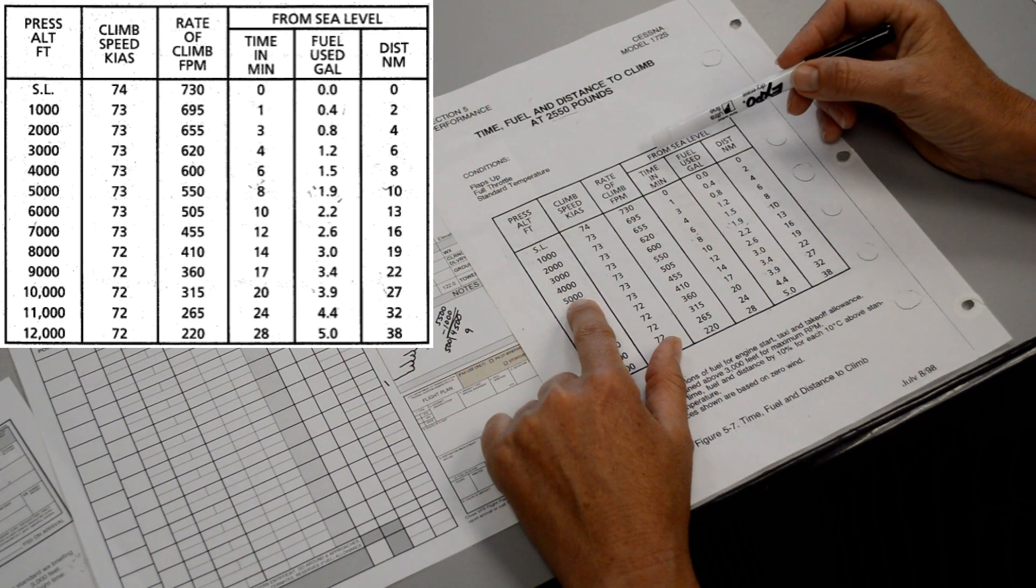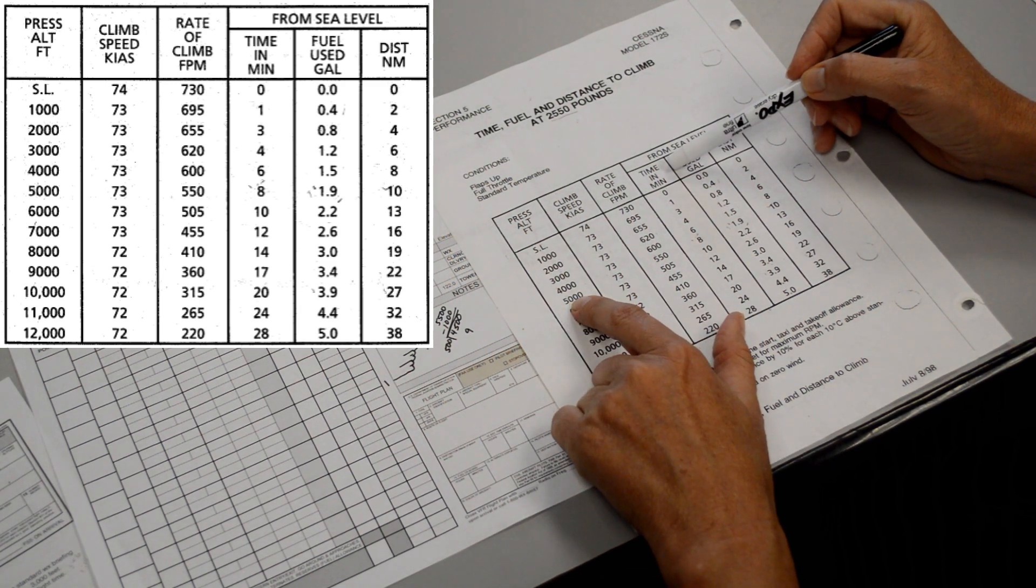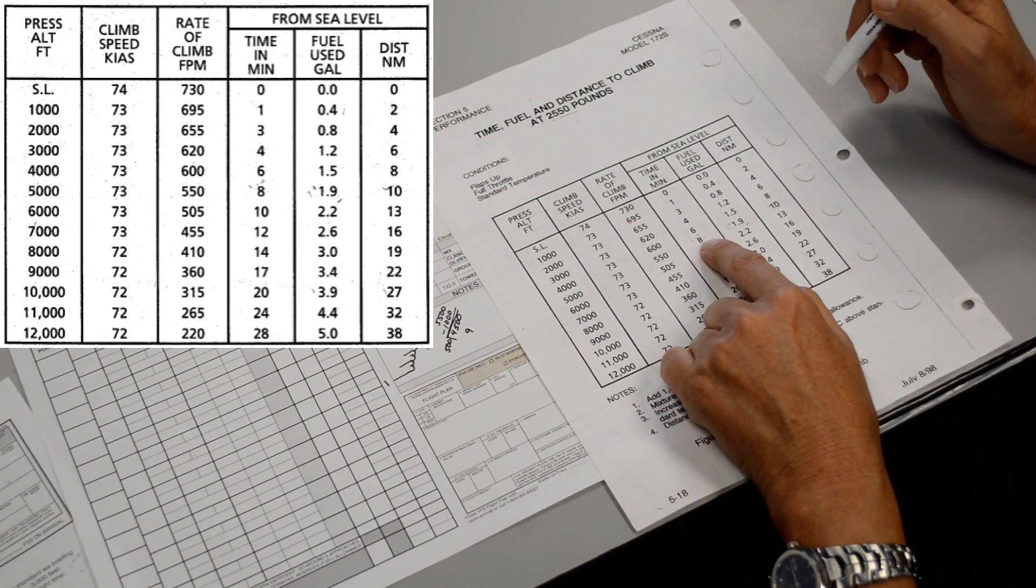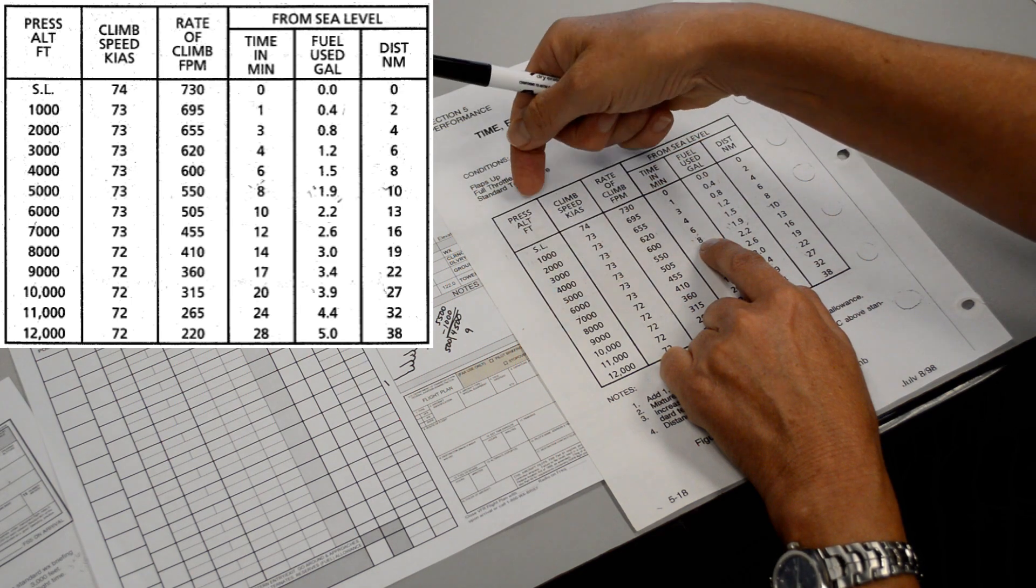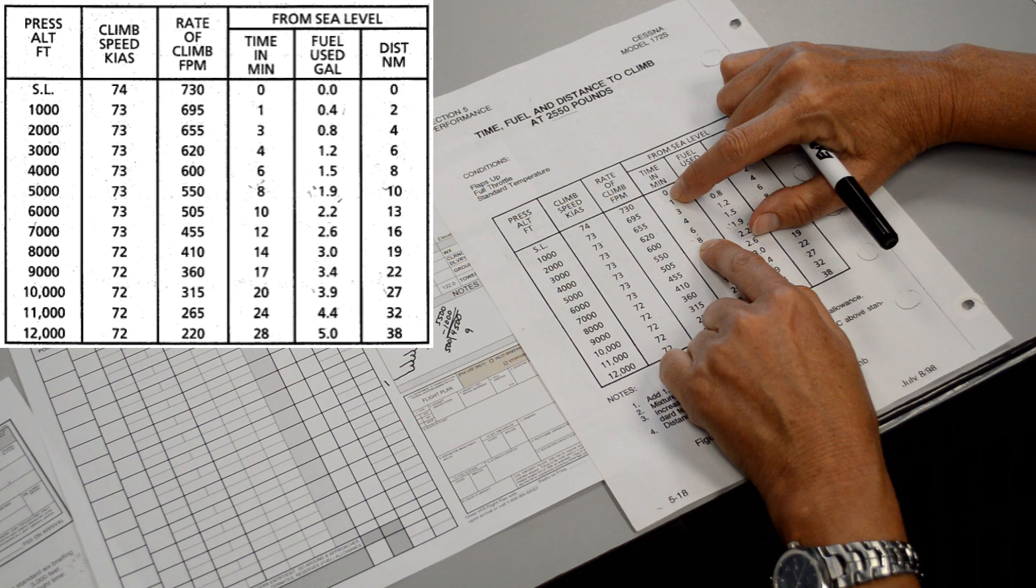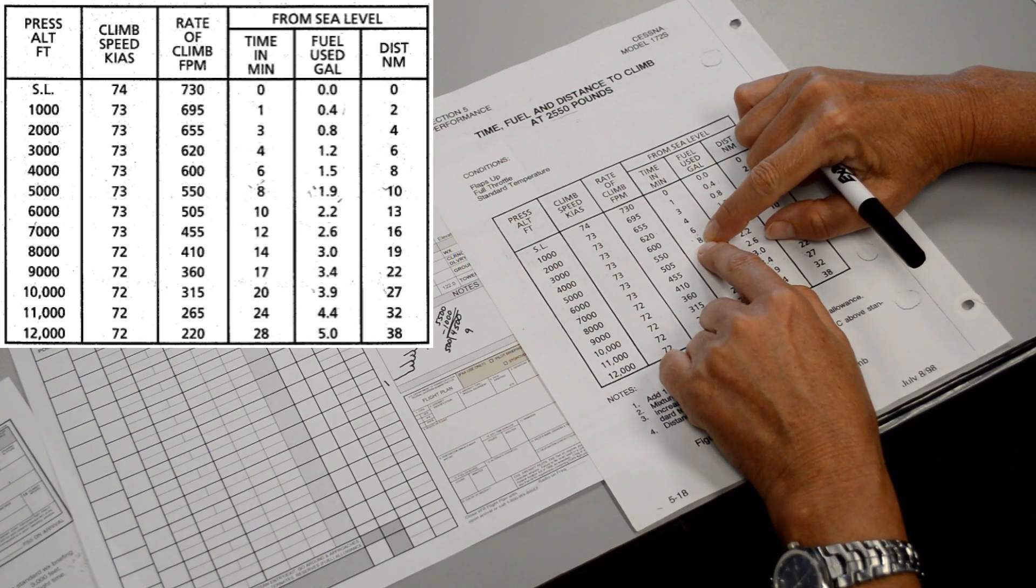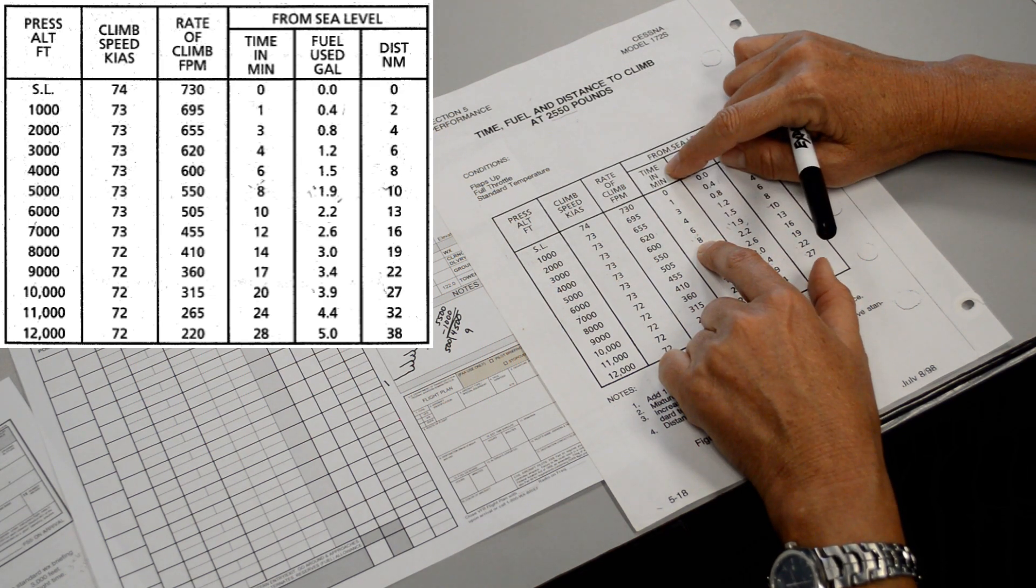Then it says from sea level to climb, if you wanted to climb up to 5,000 feet pressure altitude, it says 8 minutes, but we started around 1,000 or 500-ish for the pressure altitude. So you could really subtract a half a minute or a minute off there if you wanted to. So it's saying that you'd actually take seven and a half minutes to reach your climb.